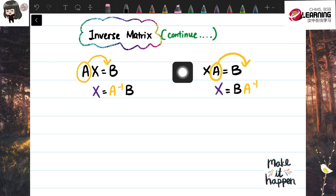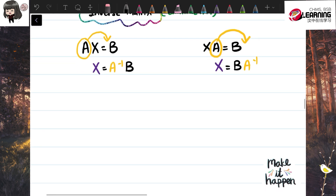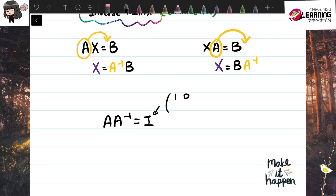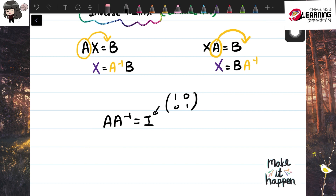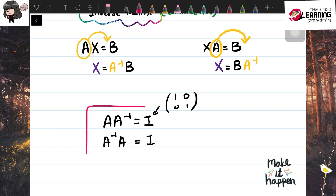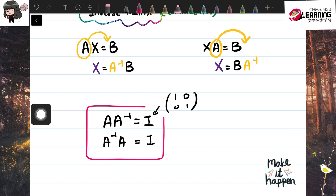Besides that, you also need to know this: if we have matrix a and we multiply it by its inverse, we get the identity matrix — which for a 2×2 matrix is the matrix with ones on the diagonal and zeros elsewhere. This also works in reverse: a⁻¹ times a also equals the identity matrix. This is a special property — multiplying a matrix by its inverse gives the identity. Please note that down.